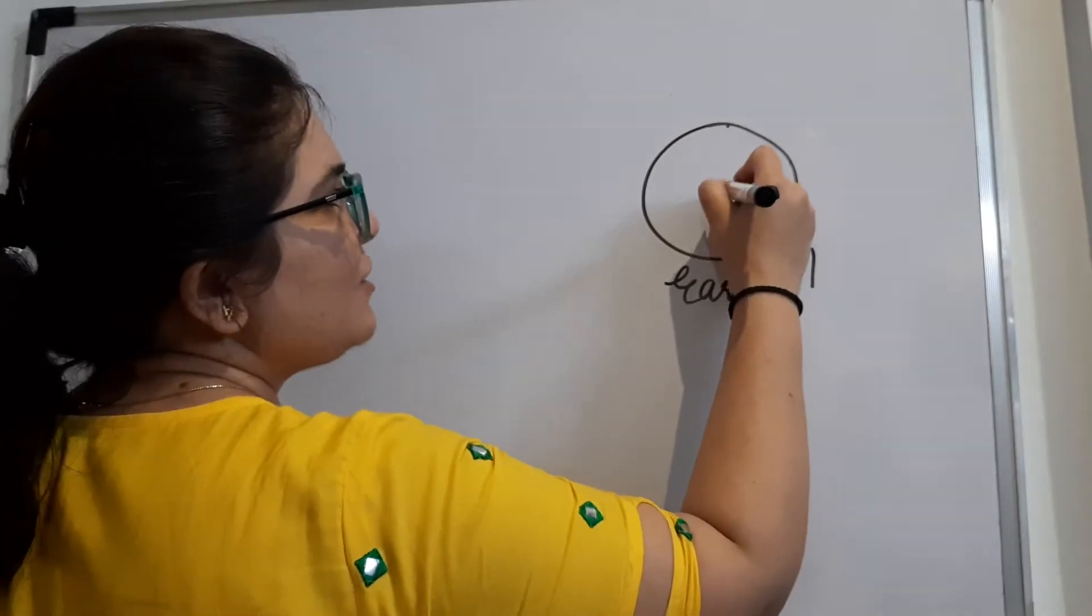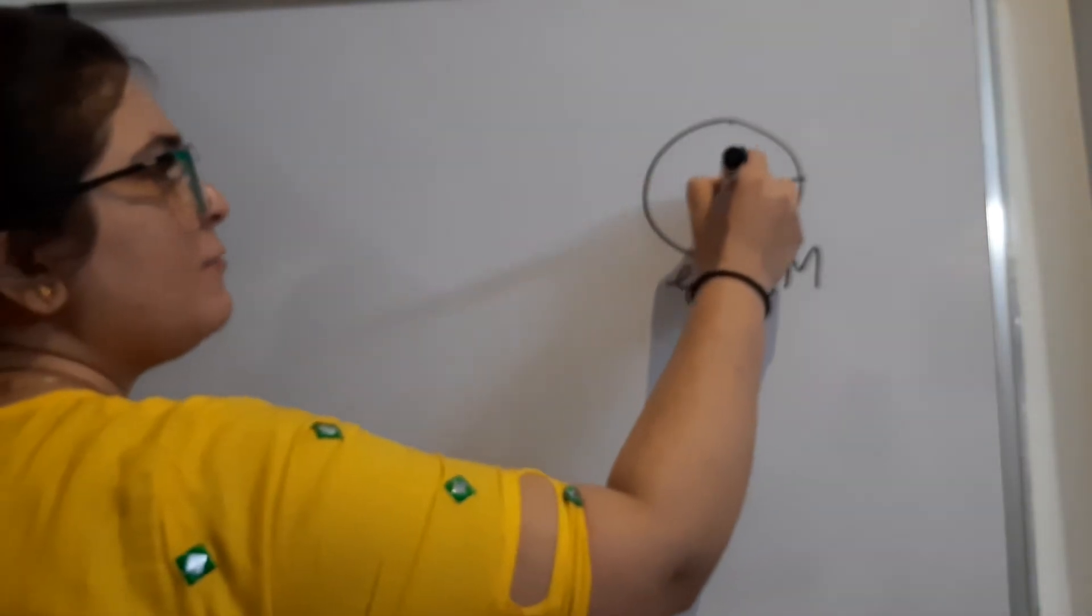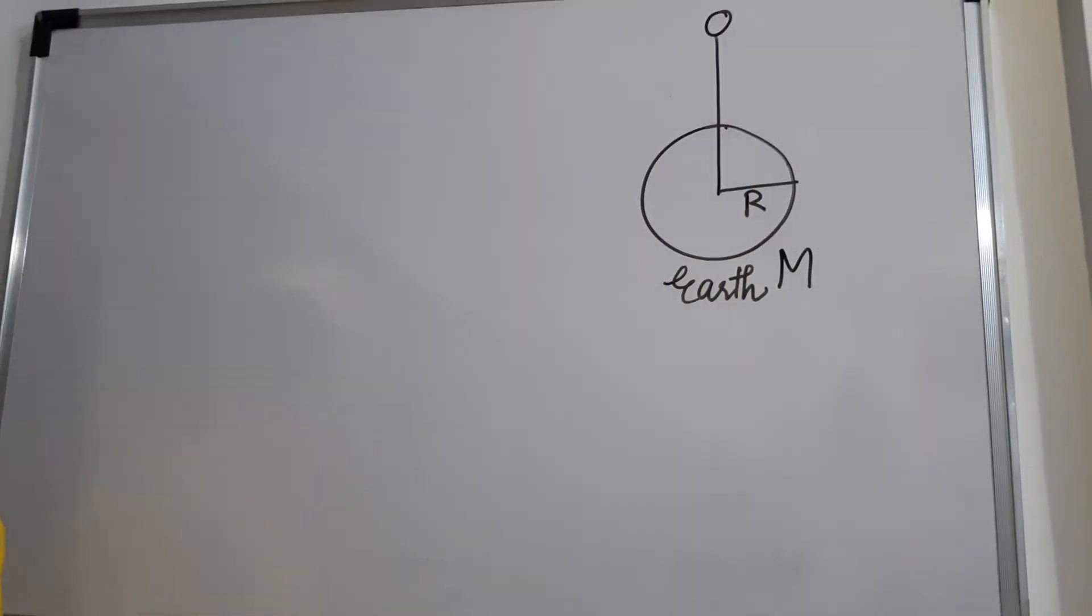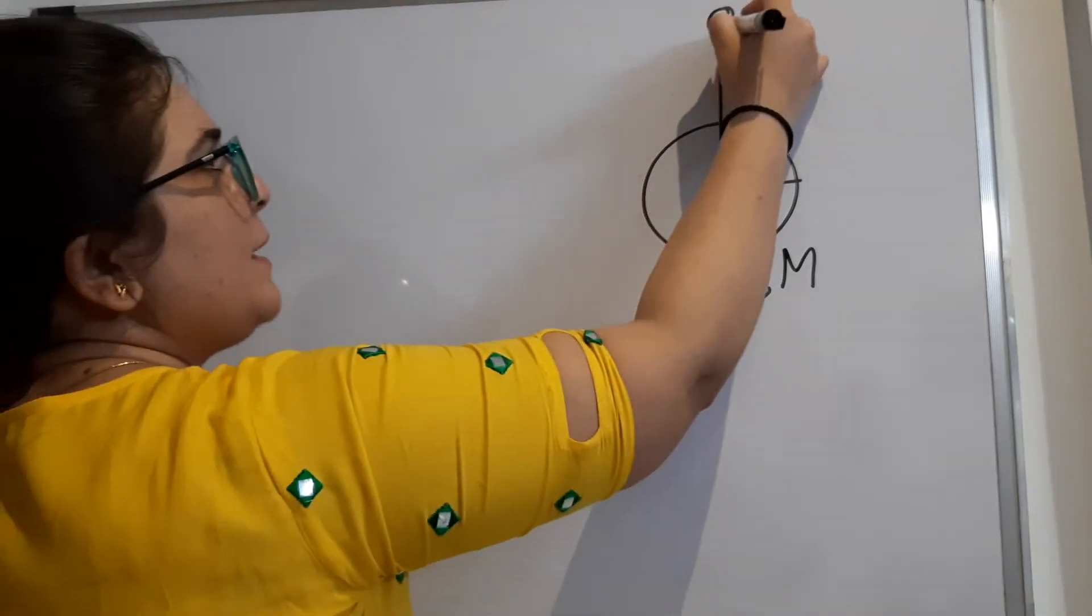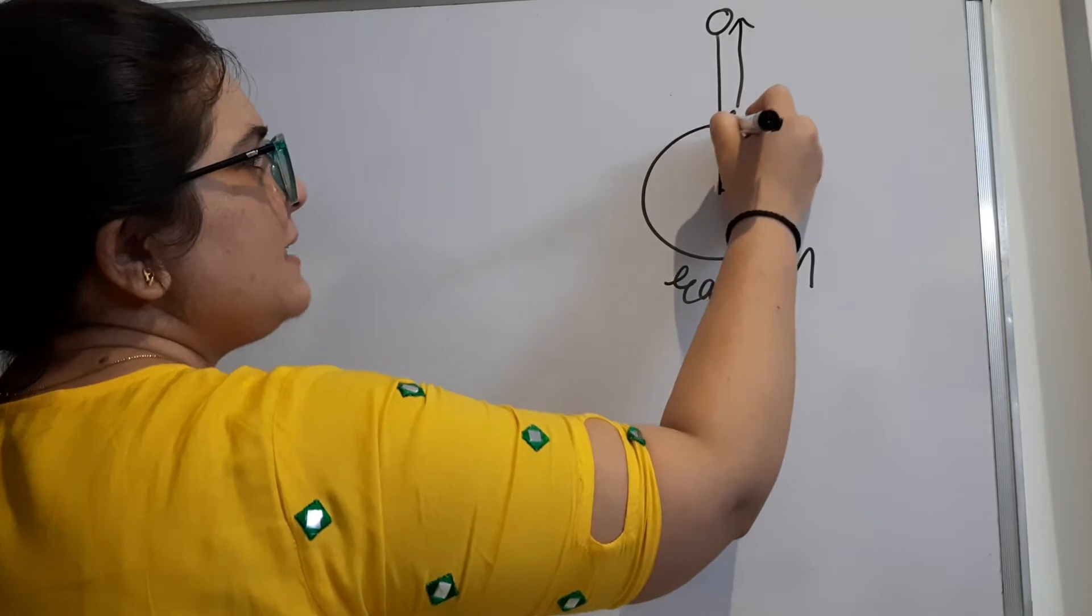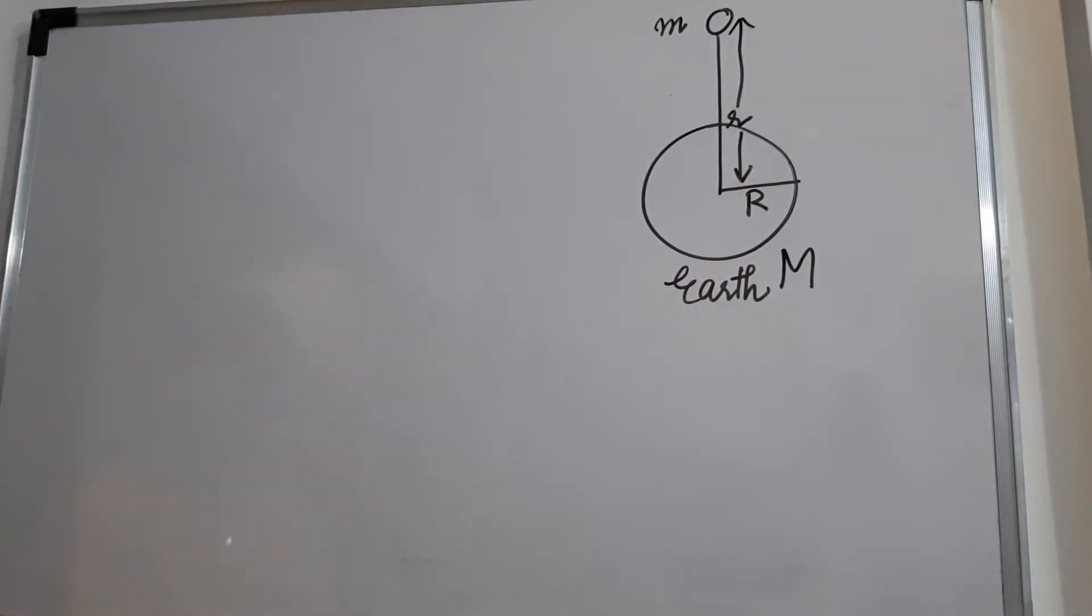Now, the radius of the Earth, let's say it is R. Let's say again we have an object or a ball which is above the surface of Earth. This is the object that we have taken, and let's say the distance between this object and the center of Earth is small r, and the mass of this object is m.